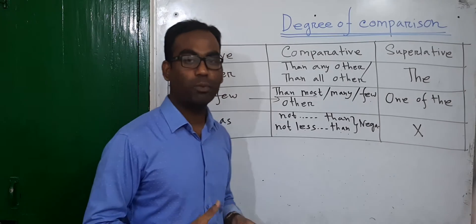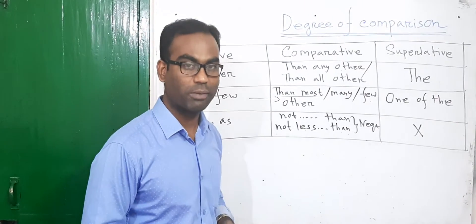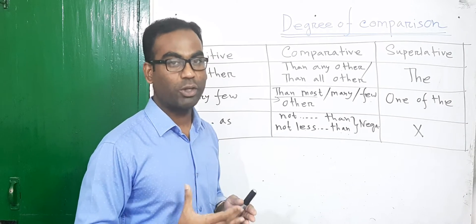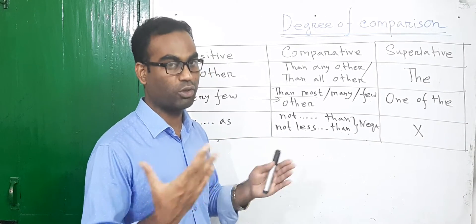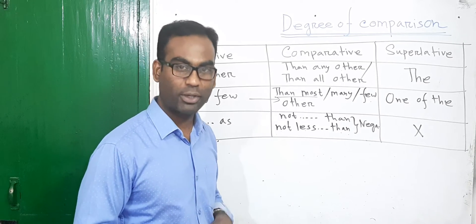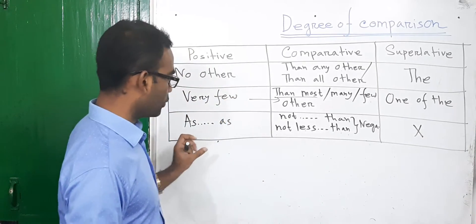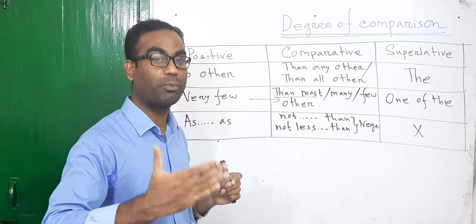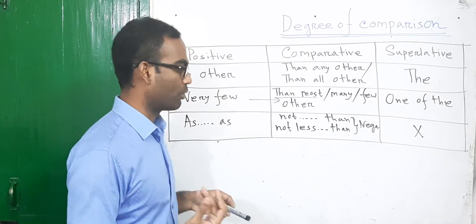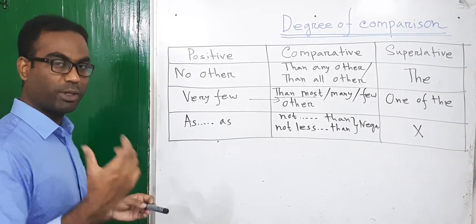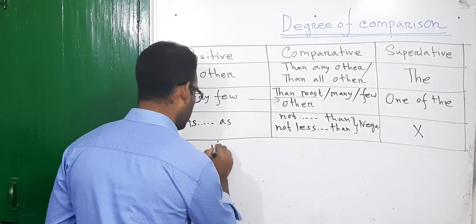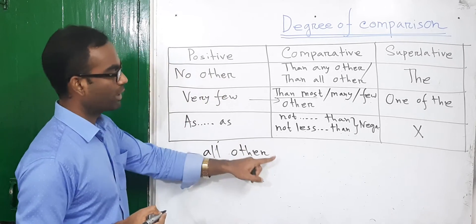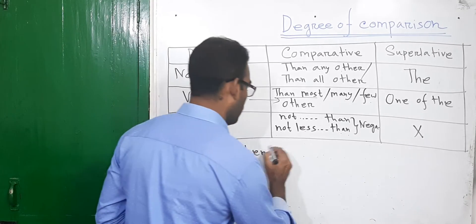This is the singular form, which is the plural form. This is the singular form, which is the plural form. We will find the plural form of sentence form. We have to see the plural form of sentence form. All other — this is the plural form.